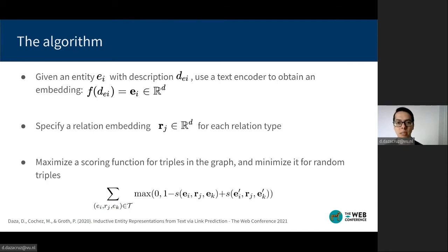And then in the third step, for each triple in the knowledge graph, we maximize a loss function that assigns high scores to observed triples and low scores to unobserved triples that are likely to be false.